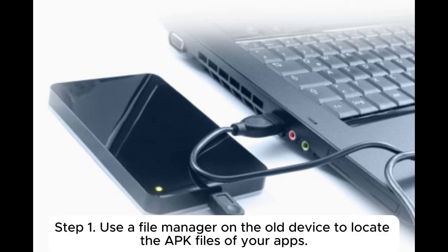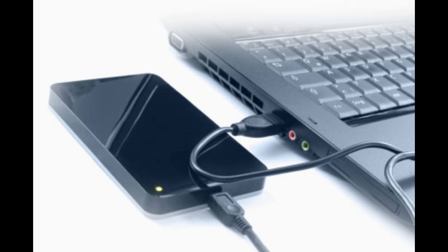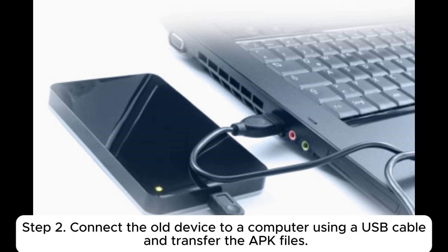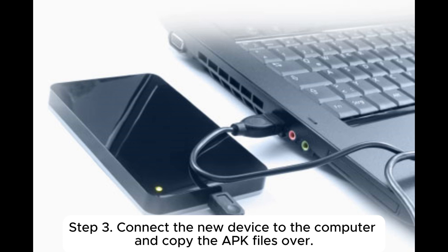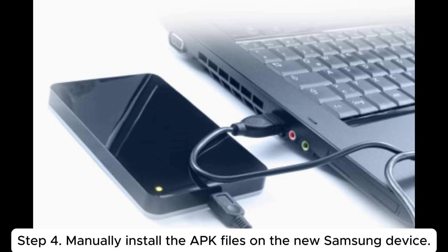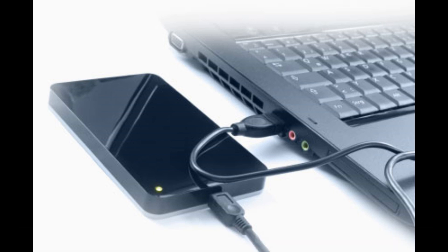Step 1: use a file manager on the old device to locate the APK files of your apps. Step 2: connect the old device to a computer using a USB cable and transfer the APK files. Step 3: connect the new device to the computer and copy the APK files over. Step 4: manually install the APK files on the new Samsung device.